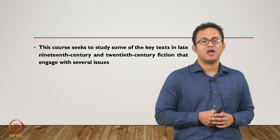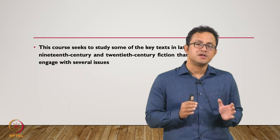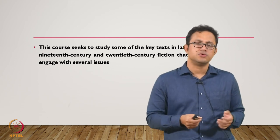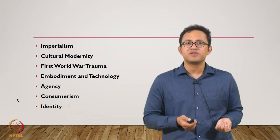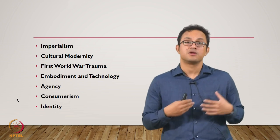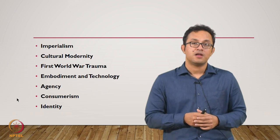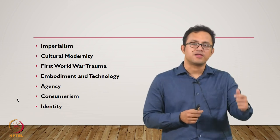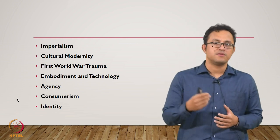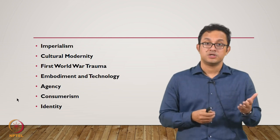Now, what are the takeaways from this course? Why are we interested in modernism at all, and why should we study modernism looking at it from 2019 or 2020, the year in which this course will be floated? This course essentially seeks to engage with some key political and cultural issues — broadly speaking: imperialism, cultural modernity, First World War trauma, embodiment of technology and the relationship between the human body and technology, agency, consumerism, and identity. All these become very fractured categories in modernism. Modernist literature becomes instrumental in focalizing and foregrounding this fractured identity — the fault lines in civilization and in communication.